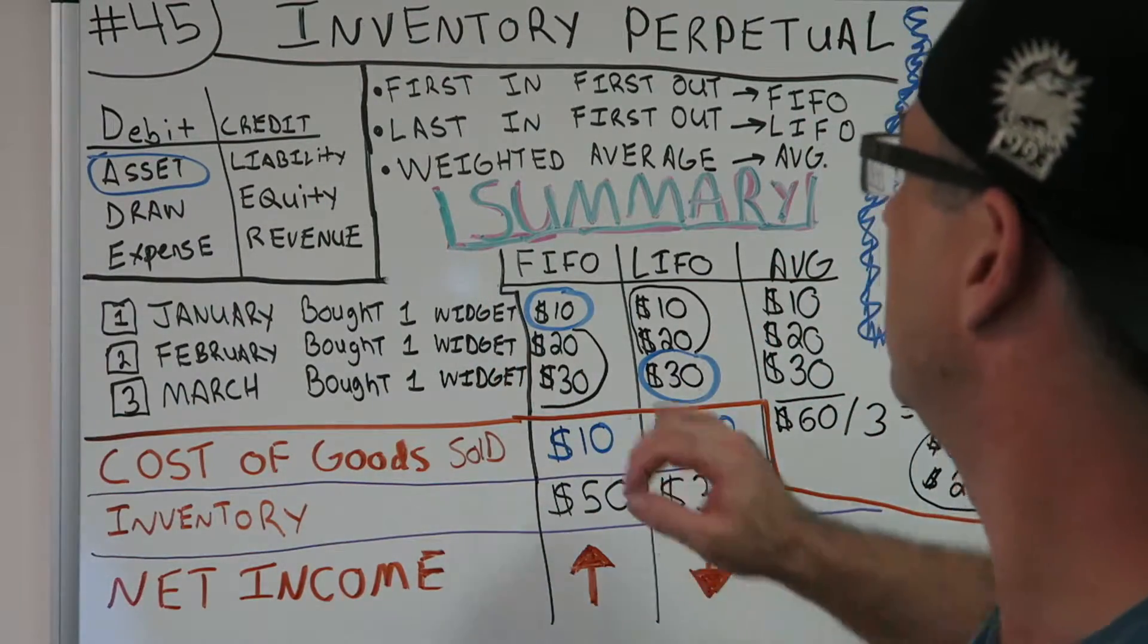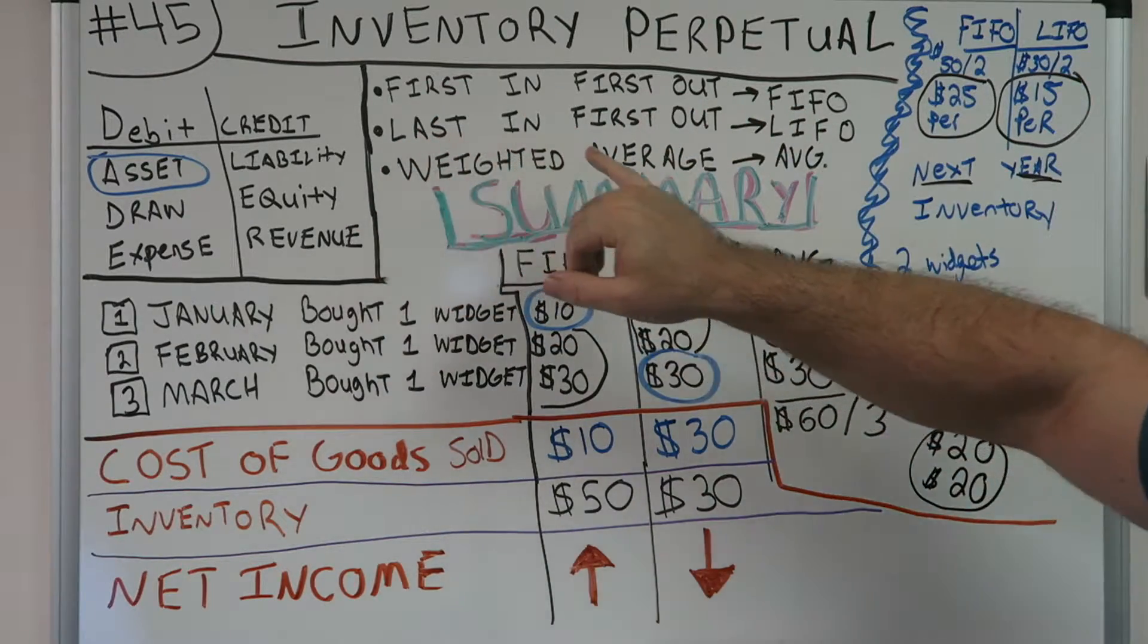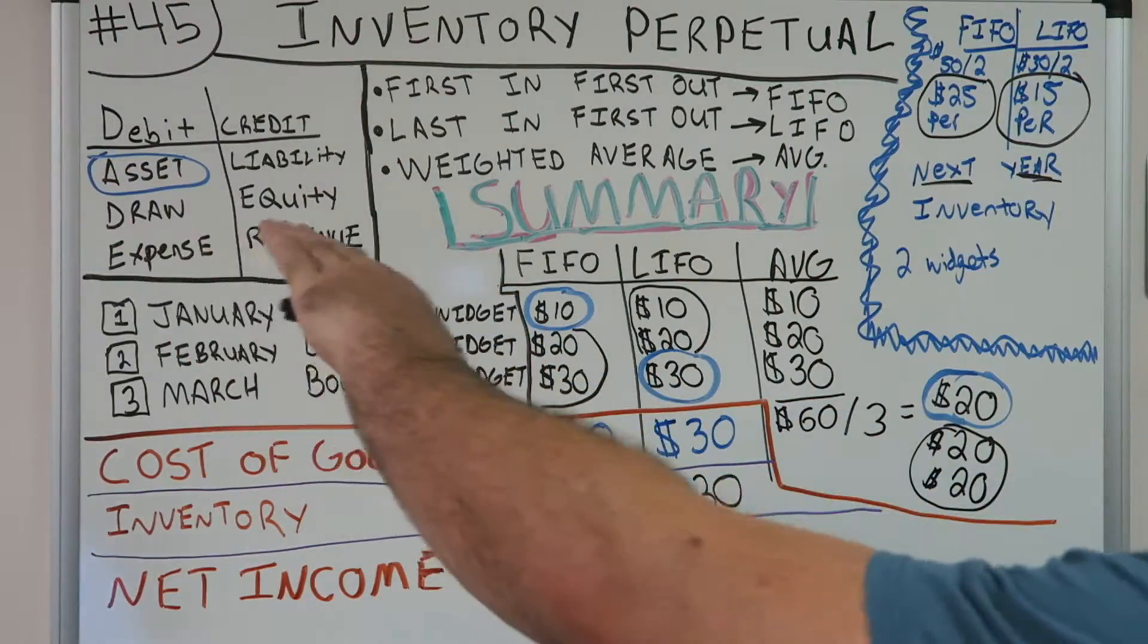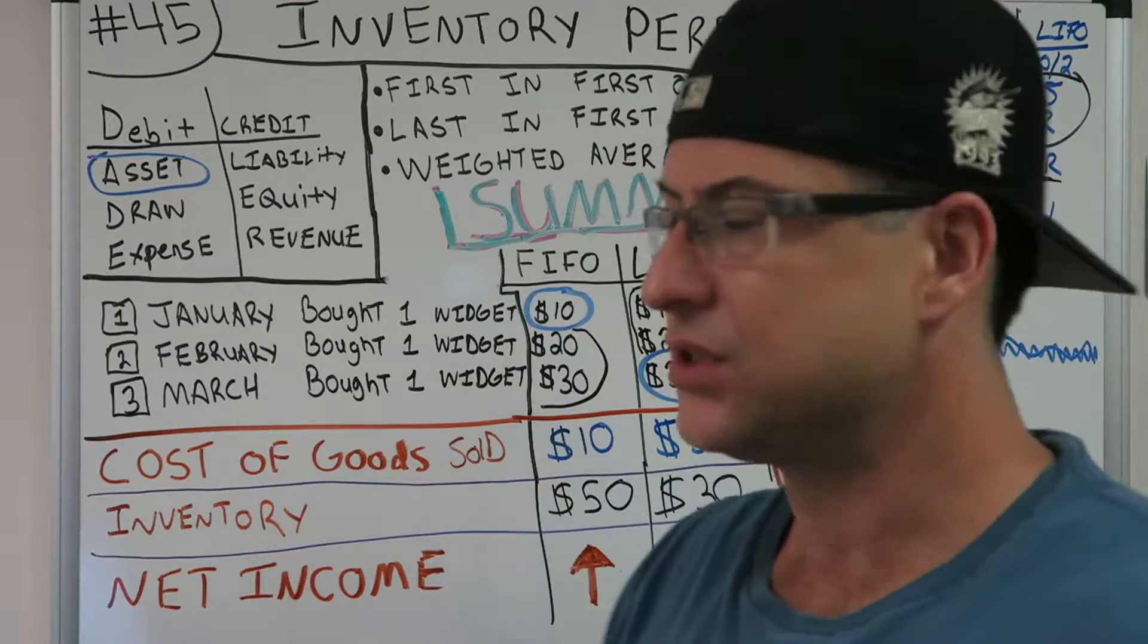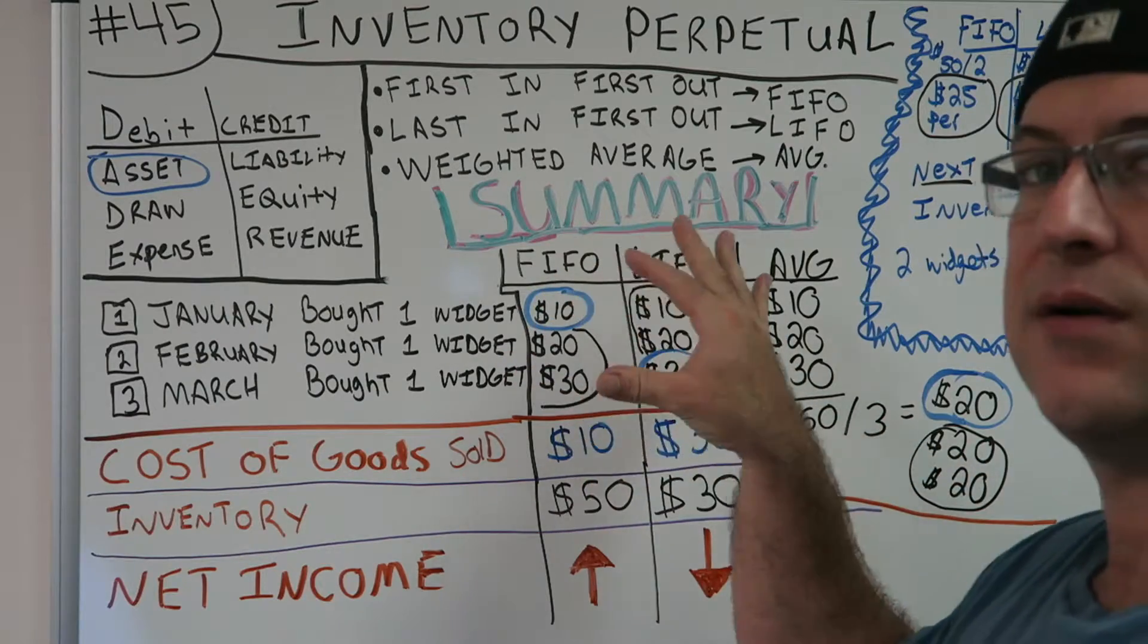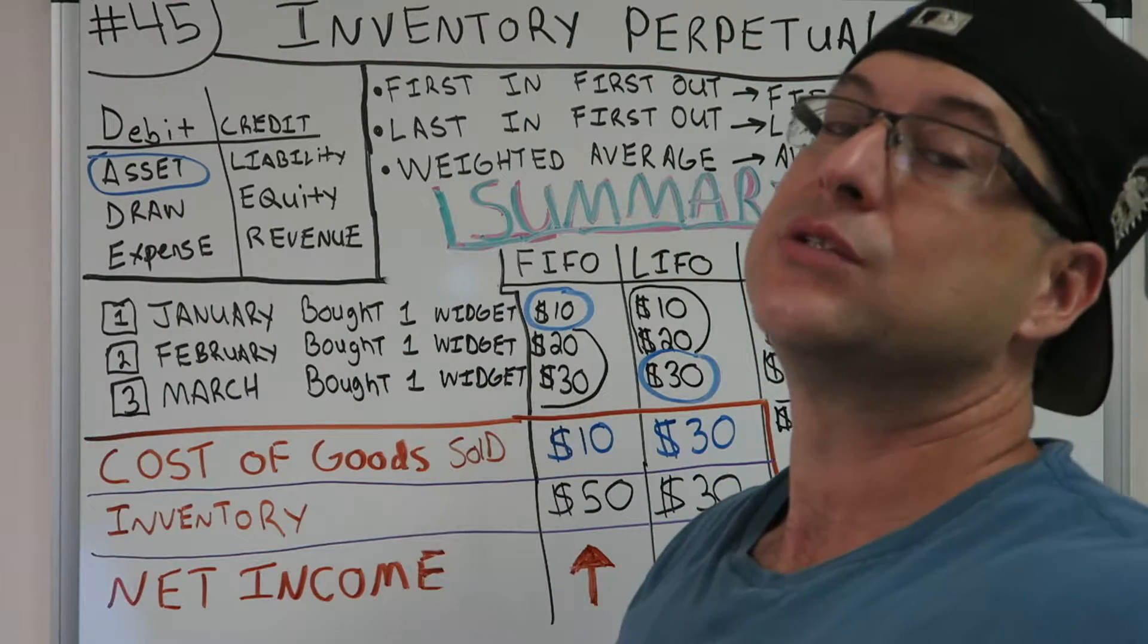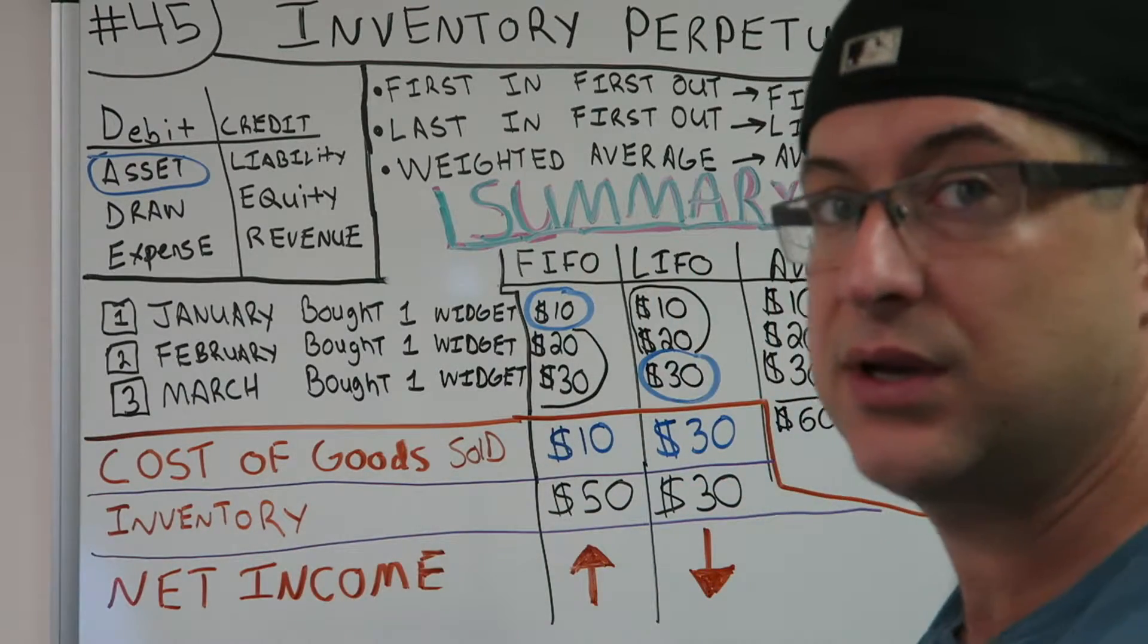What are you going to summarize? Well, we're going to summarize first in first out, FIFO. Last in first out, LIFO. Weighted average, which is just the average. All three of these and see the difference. Now I always say don't abbreviate, but this is our third video. I've written it out. So now since you know what these are, now we can start abbreviating because we need to go a little faster.